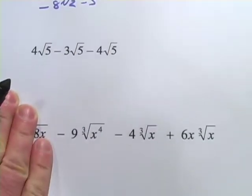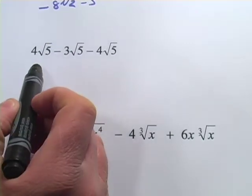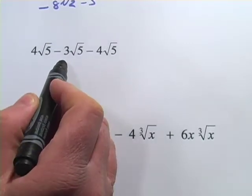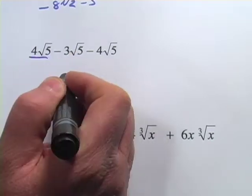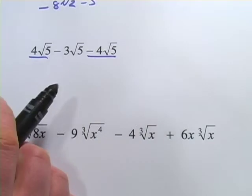Let's look at another one. Here we have 4 times the square root of 5 minus 3 times the square root of 5 minus 4 times the square root of 5. If you're looking ahead in this problem, you might see you have a positive 4 times the square root of 5 and a negative 4 times the square root of 5, and they would add up to 0.